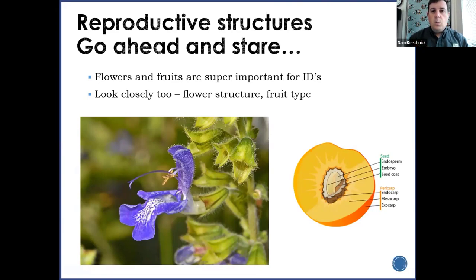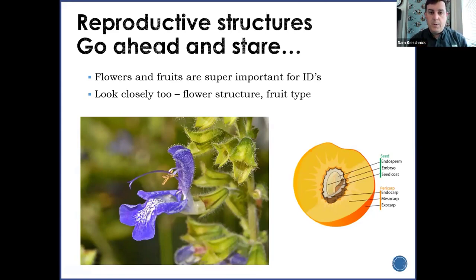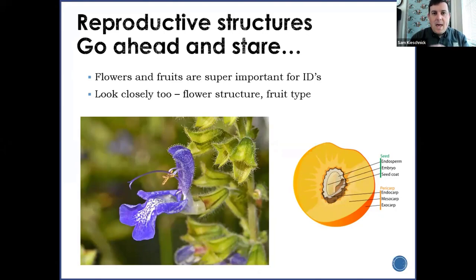Let's look at the reproductive structures — and it's okay to stare at these with plants. With reproductive structures, we're looking at things like flowers and fruits. These are important for identifying plant families, since different plant families typically have similar reproductive structures. In the case of our mints or Lamiaceae, they have that bilateral symmetry on the flower — a beautiful adaptation where a pollinator rests on the bottom petal, gets pollen dusted on its back, flies to another flower, and the pollen is picked up by the stigma.